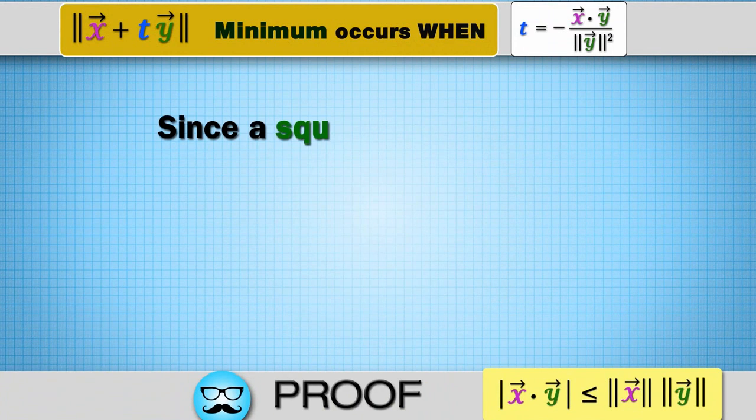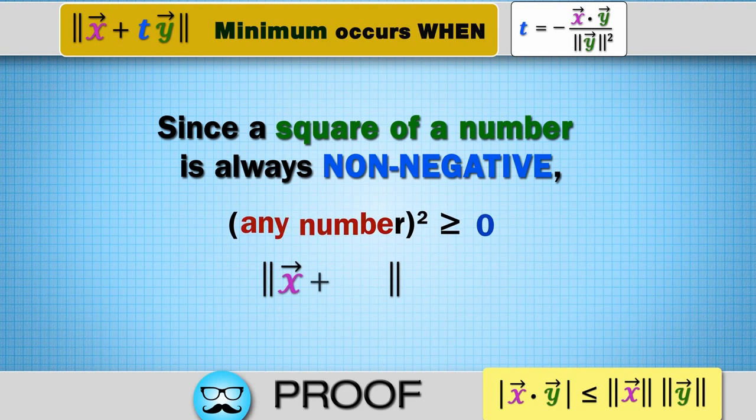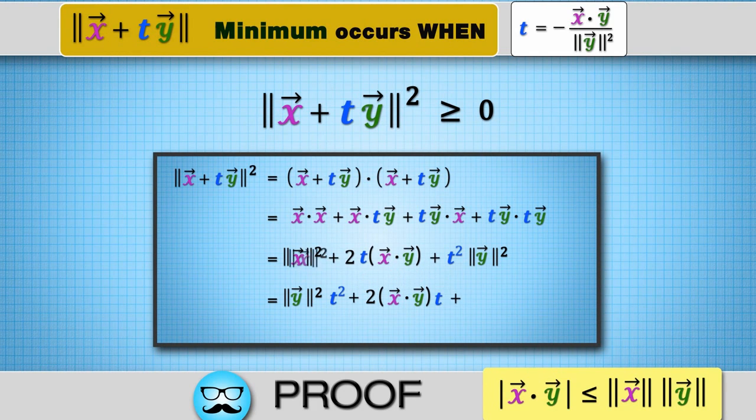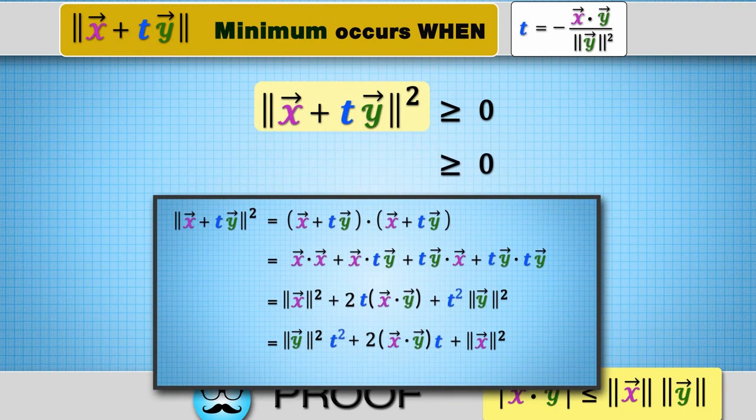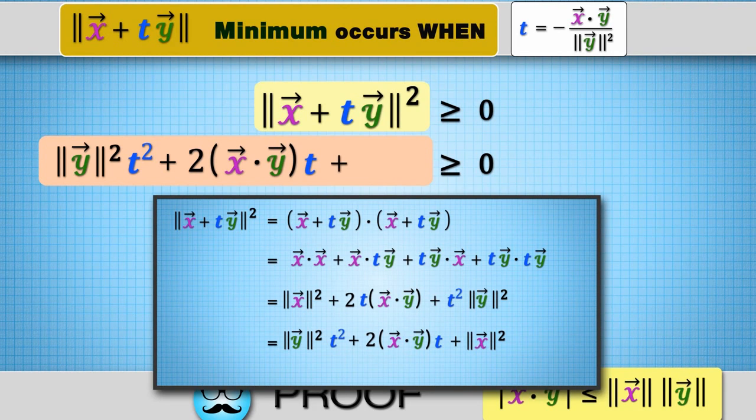Proof: Since a square of a number is always non-negative, the norm of x plus ty squared is greater than or equal to zero. From the proof of the lemma, we already know the left hand side is the same as the norm of y squared t squared plus 2x dot yt plus norm of x squared.